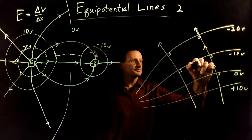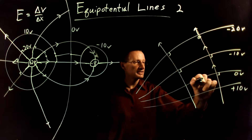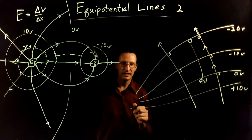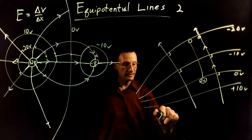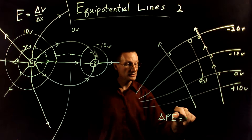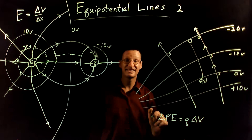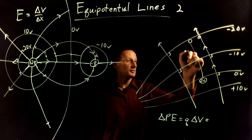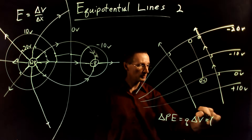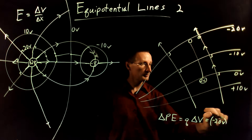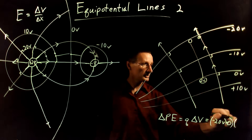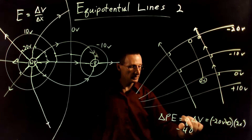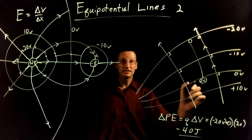Now let's say I have a two coulomb charge moving from the zero volt line to the negative 20 volt line. How much energy is that going to take? To find the change in potential energy, I take the charge times the change in potential. The change in potential is final minus initial: negative 20 volts minus zero. So that's negative 20 times two coulombs, which equals negative 40 joules. That tells me the potential energy has reduced.